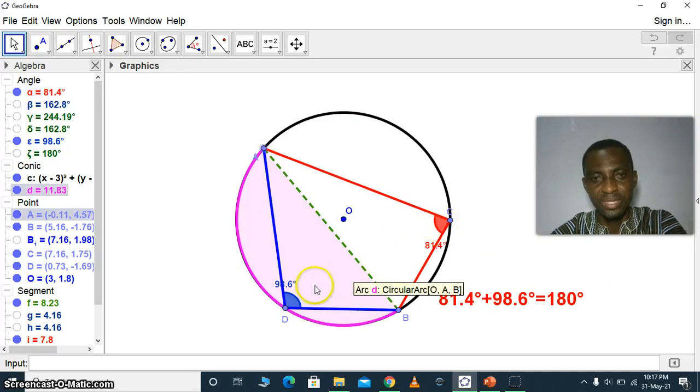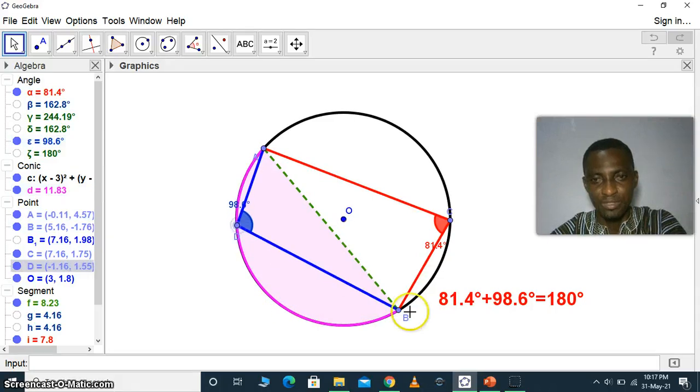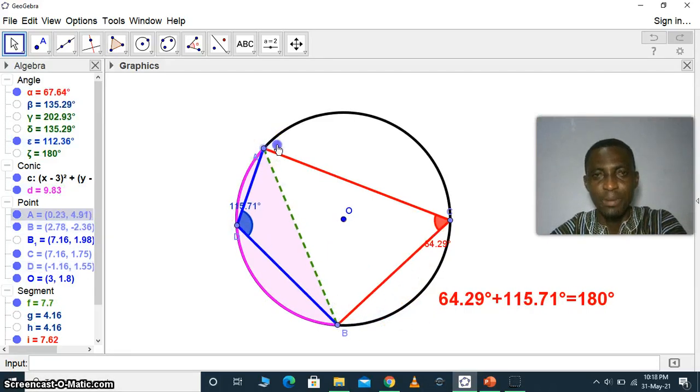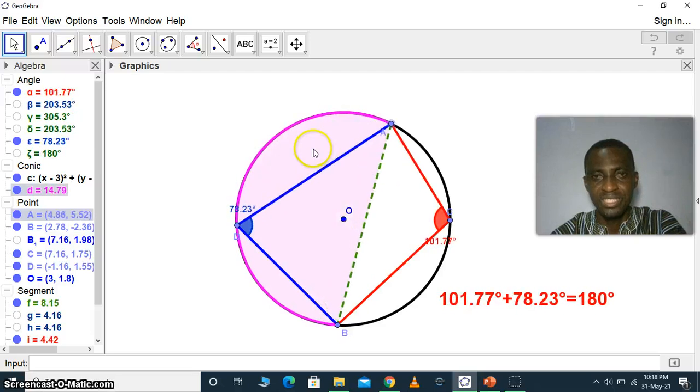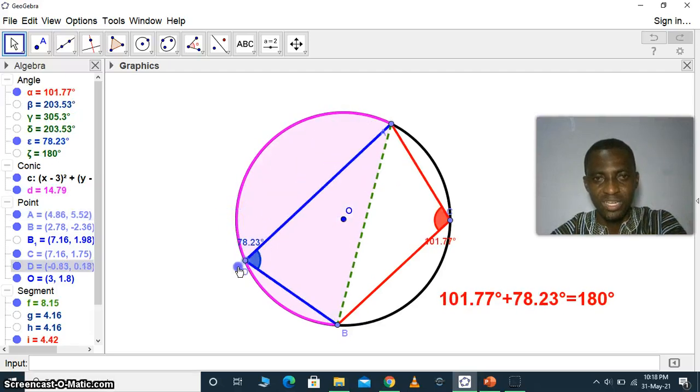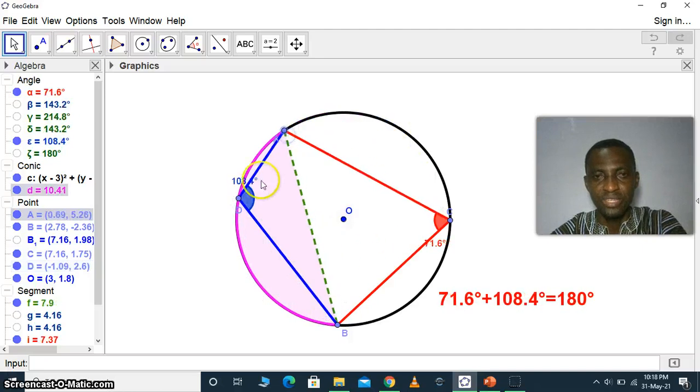GeoGebra makes it so easy to understand this theorem. Thanks to the developers of this wonderful software, and so that confirms that the two angles will always add up to 180 degrees.